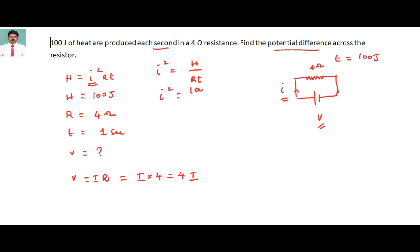I² equals 100 joules divided by resistance 4 times time 1. If I divide I get 25, so I = √25 = 5 amperes. I'm getting a current value equal to 5 amperes.